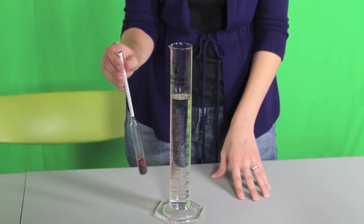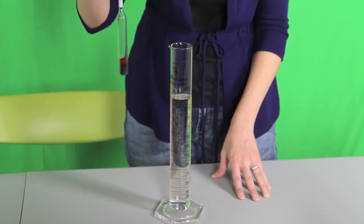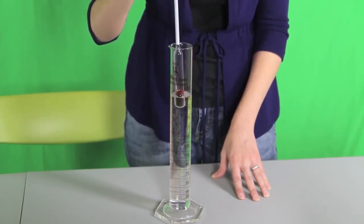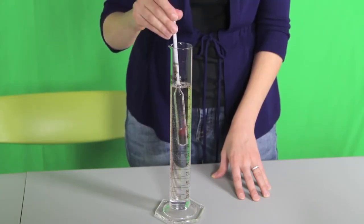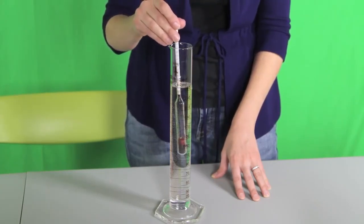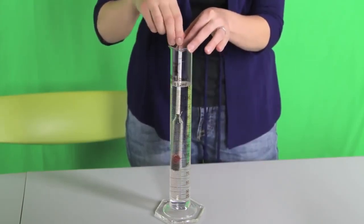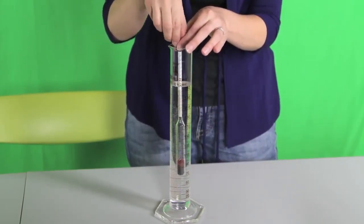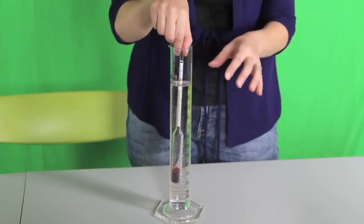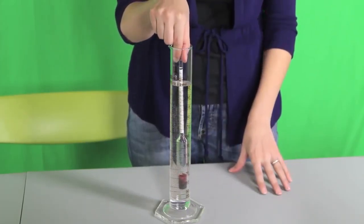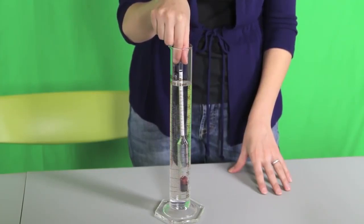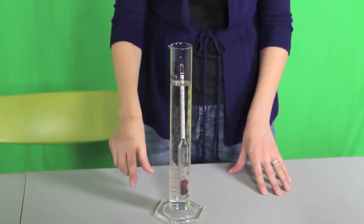Next, hold the hydrometer by the top and slowly lower it into the test cylinder. Just before you let go, twist it so that it slowly spins. This ensures that no bubbles cling to the hydrometer and cause it to float higher than it normally would. Drop the hydrometer while twisting it.